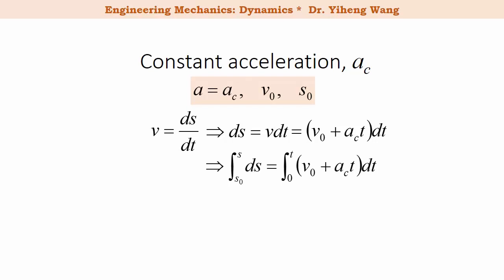Integrate from initial position s₀ on the left side, and from time zero on the right side. And we can get this and rearrange it. We get this formula that the position of the object equals its initial position s₀ plus initial velocity v₀ times t plus one half times constant acceleration ac times t to the second power.